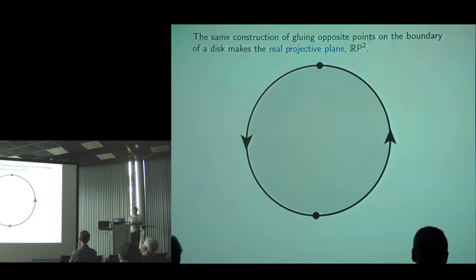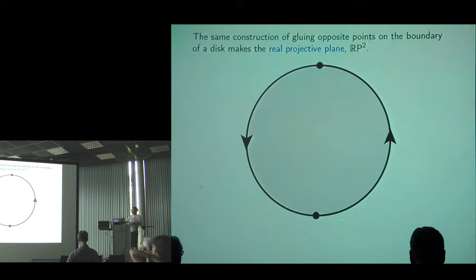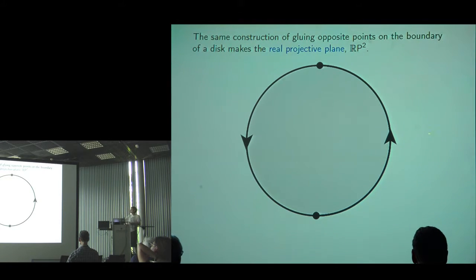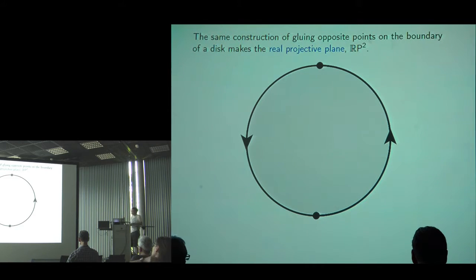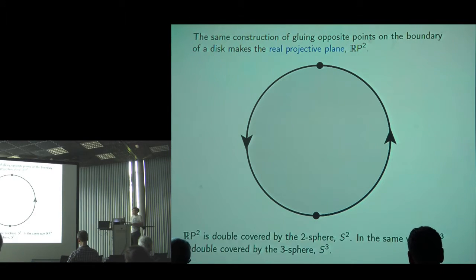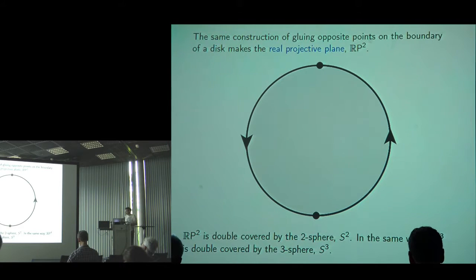You may be more familiar with RP2, the real projective plane, used in the study of surfaces. You make it by taking a disk and gluing opposite points of the boundary — the 2D analogue of gluing opposite points of a 3D ball. This is what's going on when making Möbius strips or Klein bottles: you draw a shape and put arrows to indicate how edges are identified.